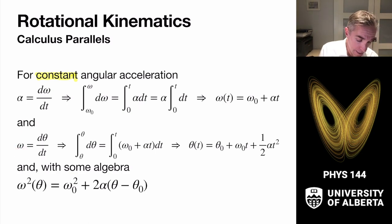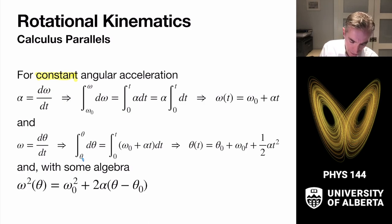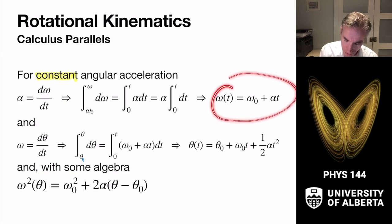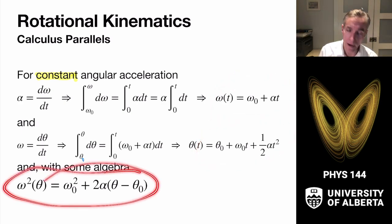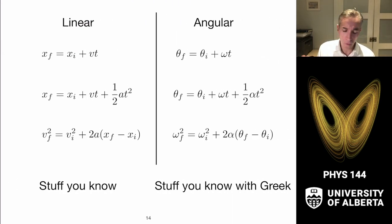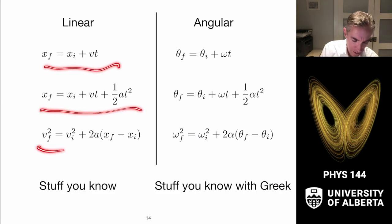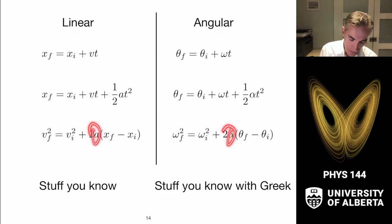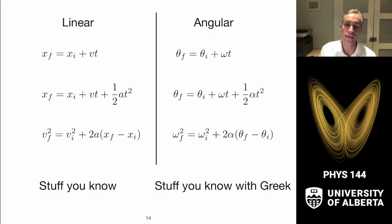Similarly, omega is d theta by dt. Integrating gives back a very familiar-looking equation, just in Greek letters. We can take these two equations, substitute in, and come up with another kinematic equation. You've seen this before — we just do it all again in Greek letters. Replace a's with alphas, v's with omegas, and x's with thetas. The equations for constant angular acceleration are exactly equivalent to linear kinematics.